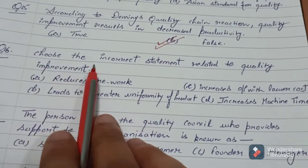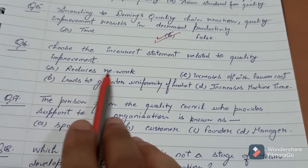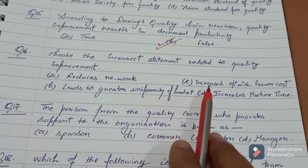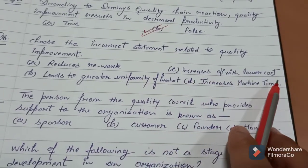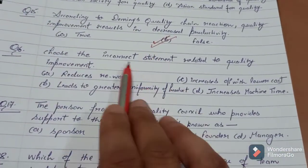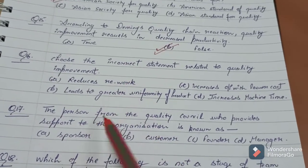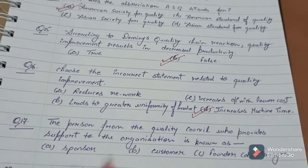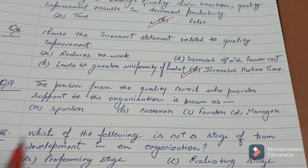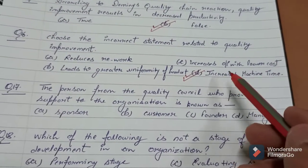Question number 16: Choose the incorrect statement related to quality improvement. Options are: reduces rework, leads to greater uniformity of product, increases output with lower cost, or increases machine time. We have to choose the incorrect statement. The answer is 'increases machine time.' Jo bhi humara quality improvement hota hai, us mein hum nahi chahenge that the machine time will increase. Therefore, this statement is incorrect.